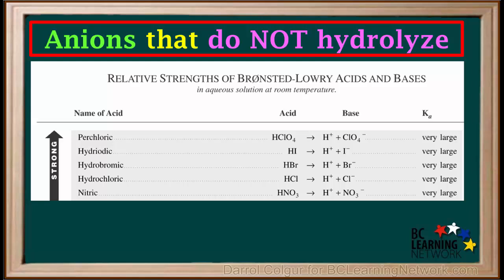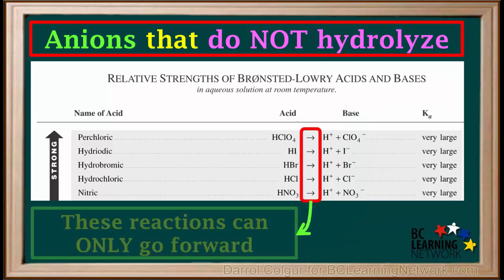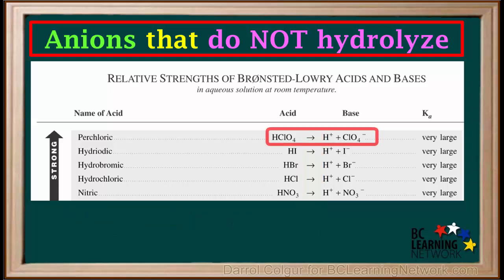Even though these are on the base side of the table, they are too weak to remove protons from any species, including water. The single arrows pointing only to the right remind us that these reactions can only go in the forward direction.